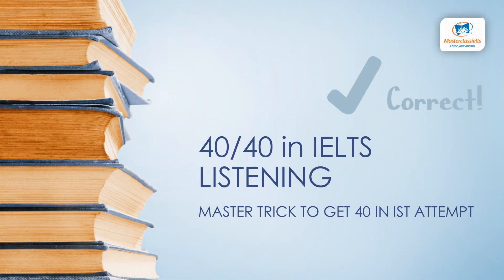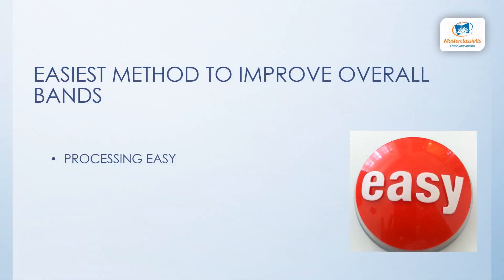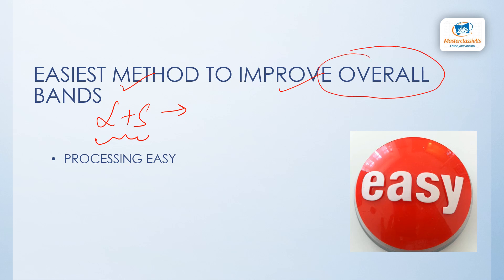Welcome to my channel. This video is about getting 40 by 40 in IELTS Listening — how you can achieve 40 marks, which means 9 bands. I am going to tell you the master trick to get 40 in your first attempt. When your listening score is high, your overall score goes up. Listening and speaking are the two modules by which you can better your overall score.